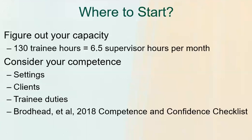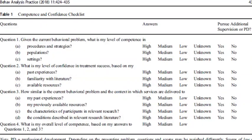Broadhead et al. in 2008 came out with a competence and competence checklist, and that is a nice starting point. It gives kind of a framework for how you might consider your competence for a particular situation. Here is a chart — the checklist from the article in Behavior Analysis in Practice — and it's basically four questions. The first question asks: given the current trainee setting or situation, what is my level of competence in — and then you rate yourself high, medium, low, or unknown — for procedures and strategies, populations, and setting.